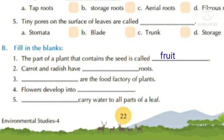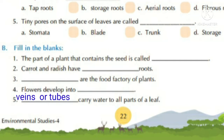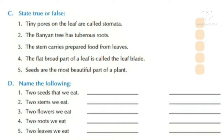Section B — Fill in the blanks. Number one: the part of a plant that contains the seed is called fruits. Number two: carrot and radish have tap roots. Number three: leaves are the food factory of plants. Number four: flowers develop into fruits. Number five: veins or tubes carry water to all parts of a leaf.